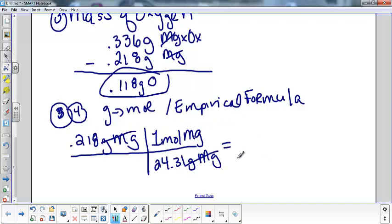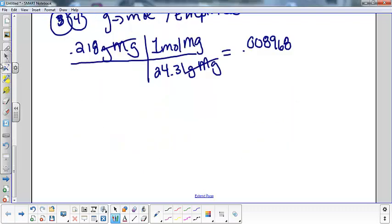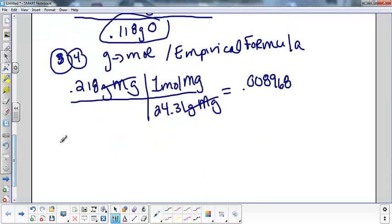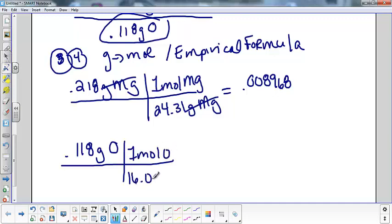Divide. I want to carry at least four sig figs here to make my math more accurate. So 0.008968. And I'm going to center this because we're going to need them both. I've got to do the same thing with oxygen. So 0.118 grams of oxygen.